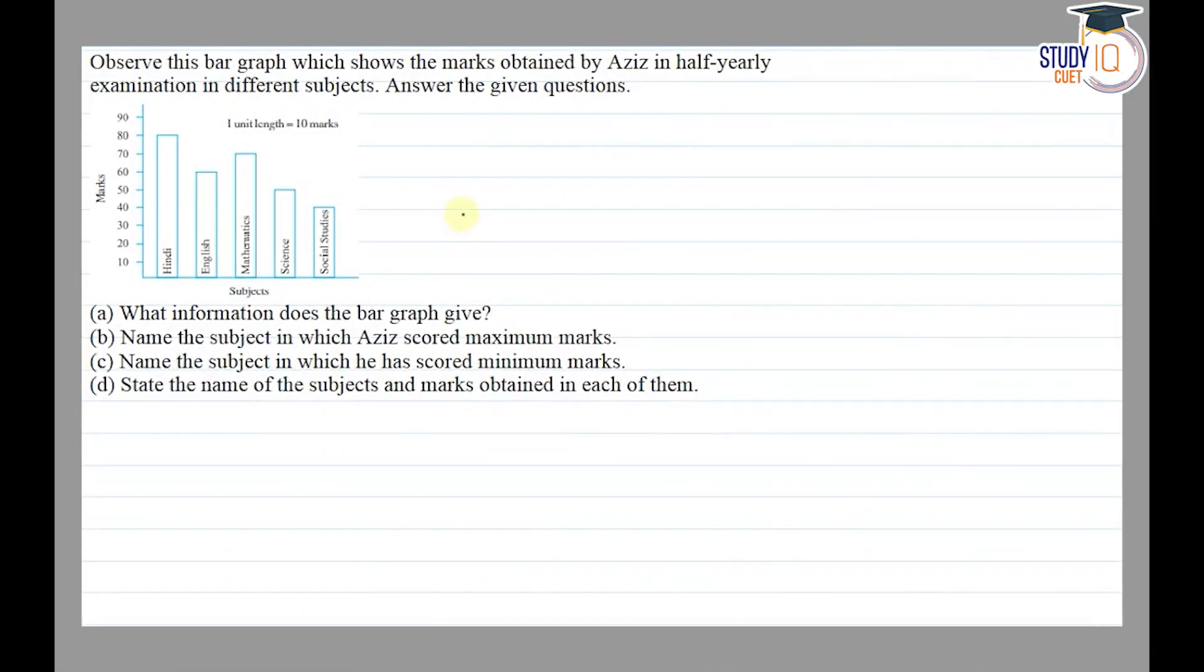Hello everyone, this question appears in Class 6 NCERT chapter of Data Handling. This is the third question of exercise 9.3. The question says observe this bar graph which shows the marks obtained by Aziz in half-yearly examination in different subjects. Answer the given questions. We have to find out what information does the bar graph give.